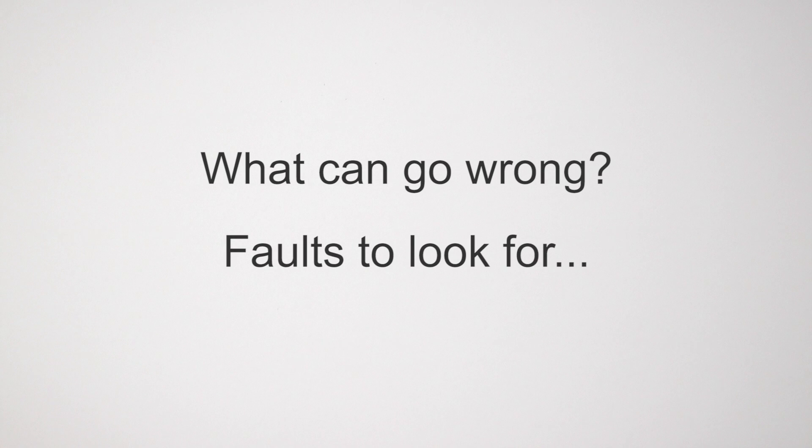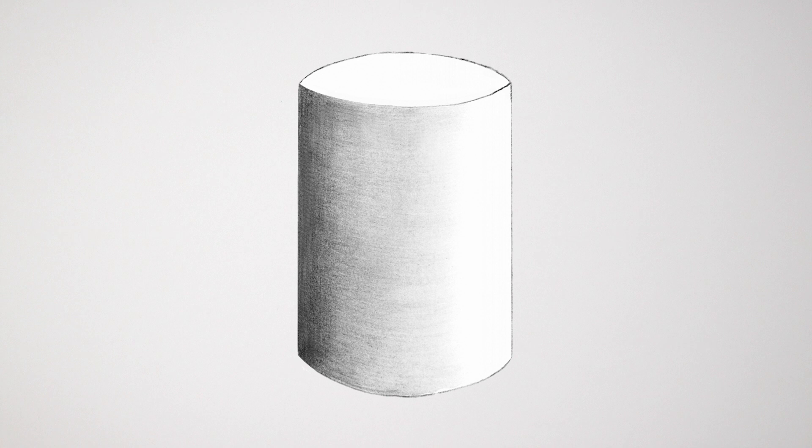What can go wrong? These are some of the common faults to look out for. The first concerns the cylinder itself. Does it look like this? An ellipse is a circle in perspective, so it obeys the rules of a circle. A circle never has angles, only curves.